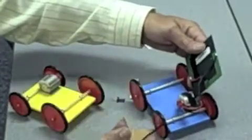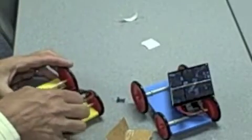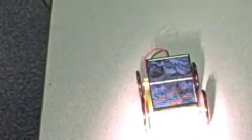Velcro will go on the back of the solar panel and on the motor housing. This will allow the panel to be tilted. Simply shine a light or take her outside. And your solar powered vehicle is on its way.